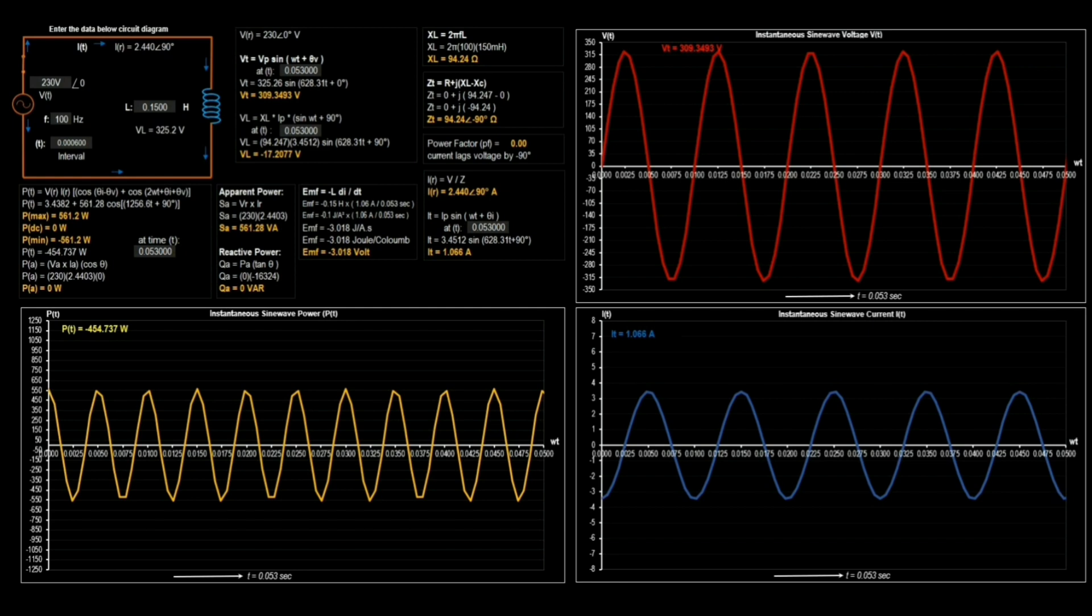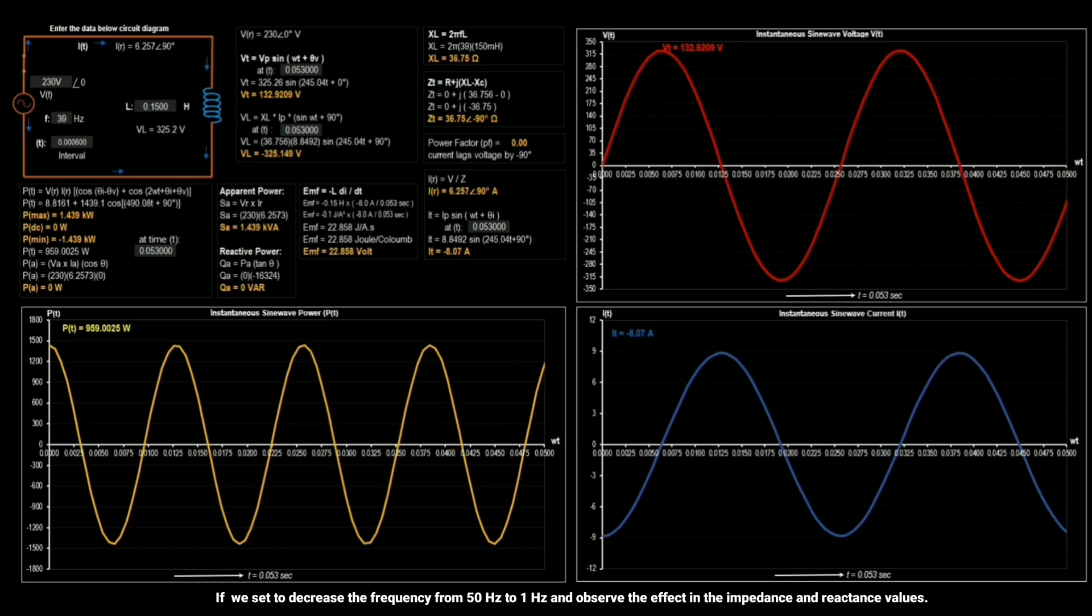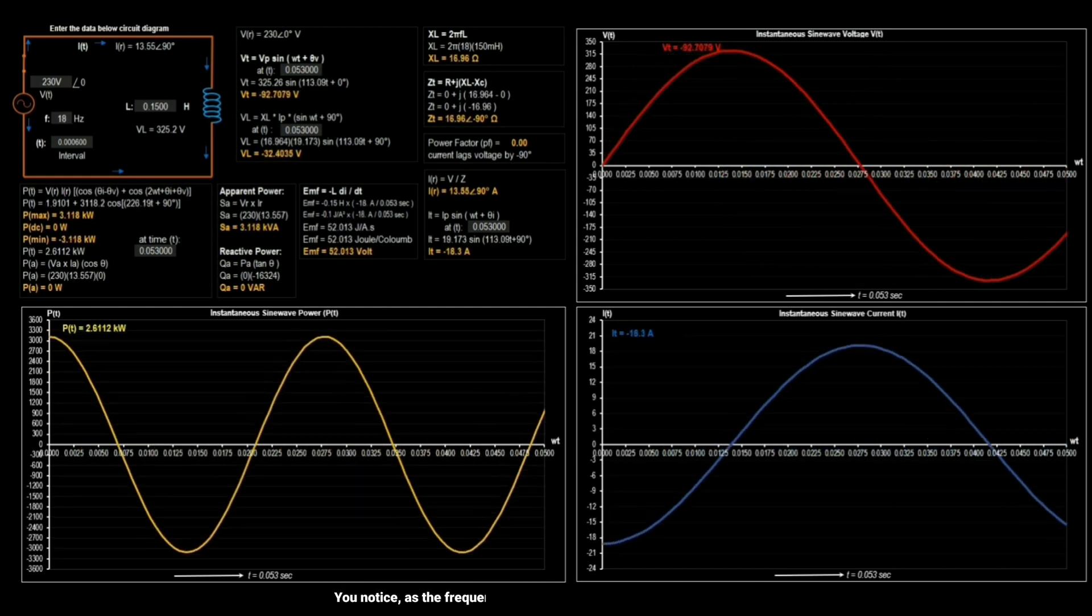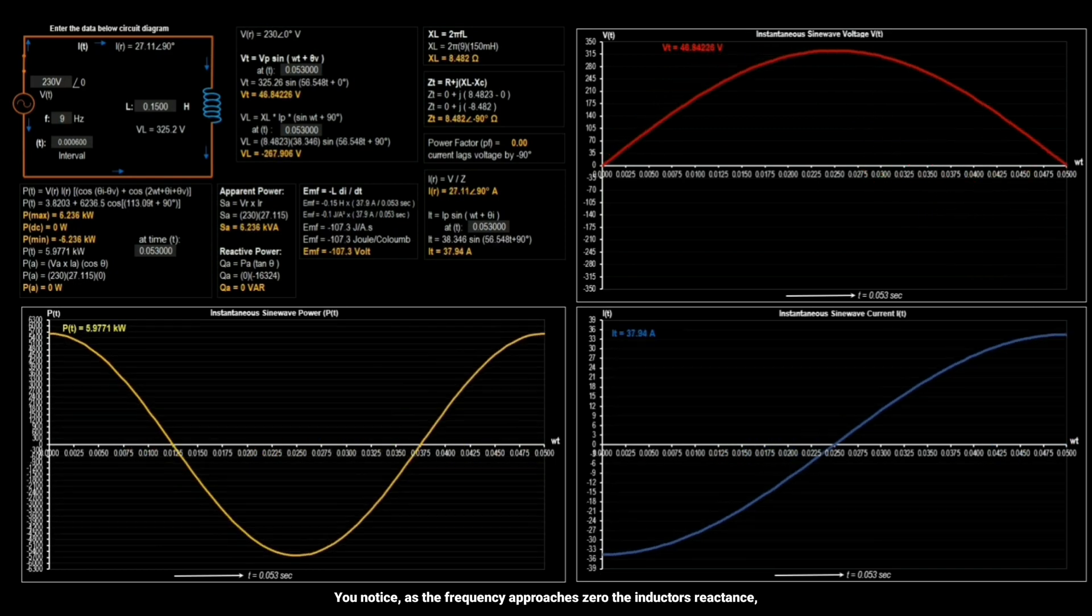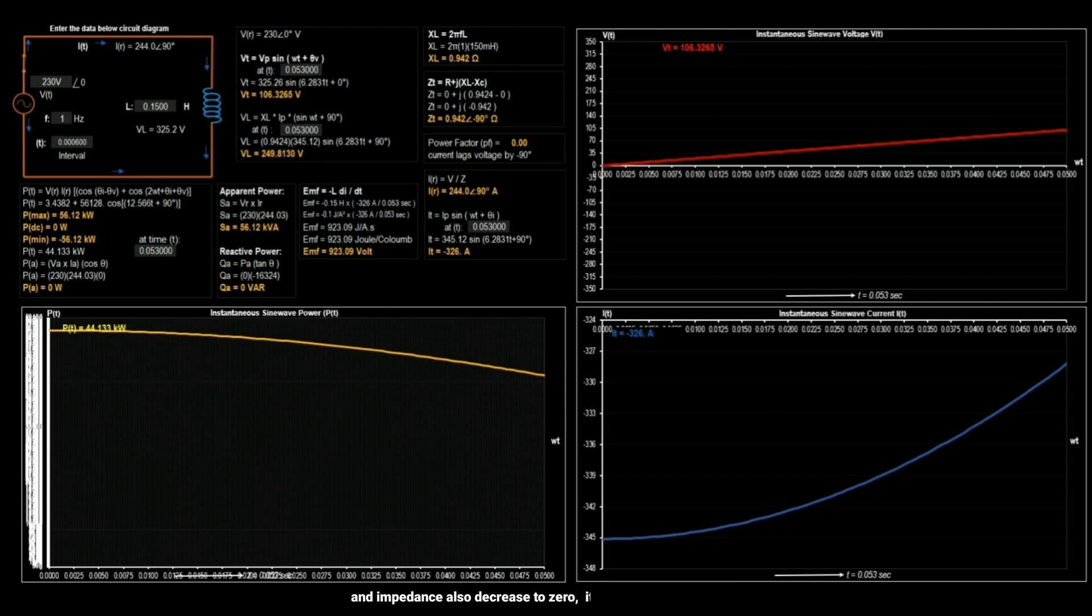If we set to decrease the frequency from 50 Hz to 1 Hz and observe the effect in the impedance and reactance values. You notice, as the frequency approaches 0, the inductor's reactance and impedance also decrease to 0, it is like a short circuit.